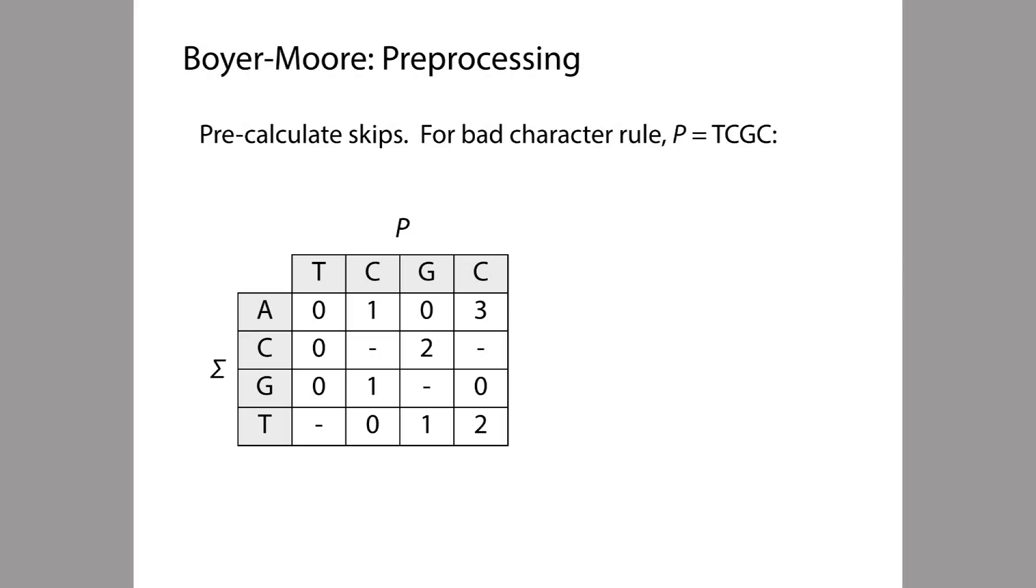So for example, I'm showing you a table here. This table will help us apply the bad character rule for a particular pattern P. So here the pattern is TCGC, which you can see is labeling the columns of this matrix here.